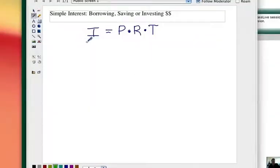The formula for simple interest is I equals PRT. I stands for interest. If you're borrowing the money, that's the extra amount that you pay the bank for being able to use their money. If you are saving it or investing it, that's the amount of money extra you get back.